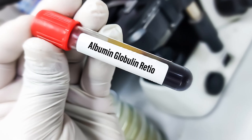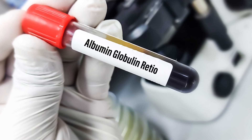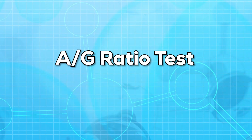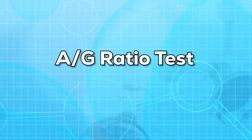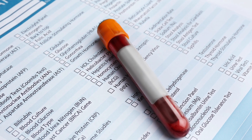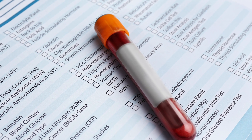This test also compares the amount of albumin to globulin, and this comparison is known as the AG ratio test. If your test results are not normal, it may mean a serious health condition.